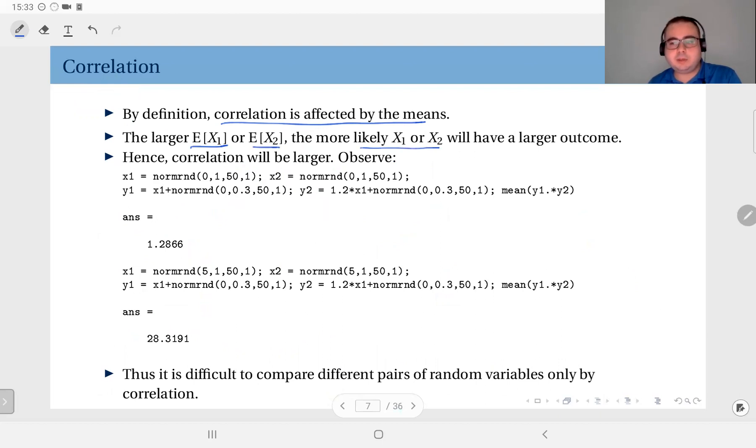And correlation, therefore, will be larger. For instance, here I do the same with here. I use a mean of zero. Here I use a mean of five. You see, I have one point almost three correlation in the first case, and here it's 28. So there's quite a difference between them. So what does this mean? That means it is difficult to compare different pairs of random variables only with respect to correlation because means affect the result.